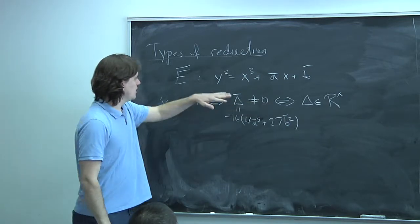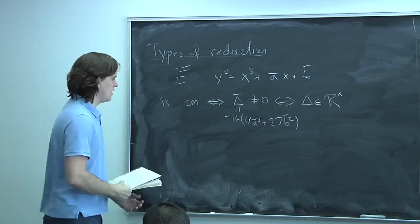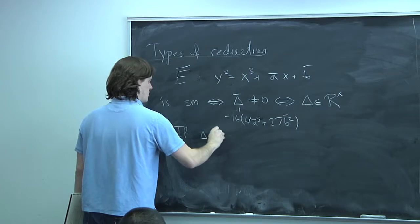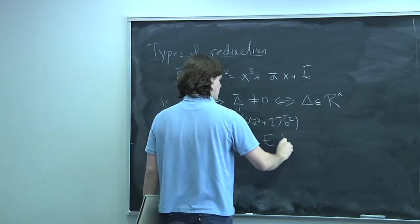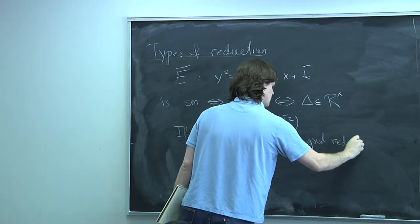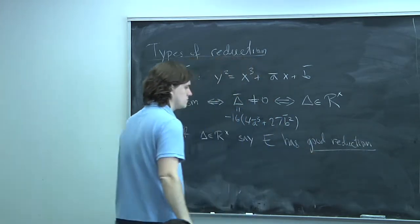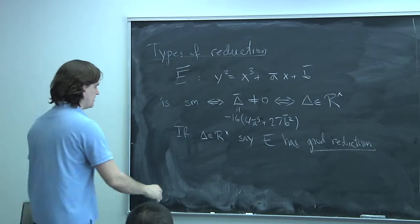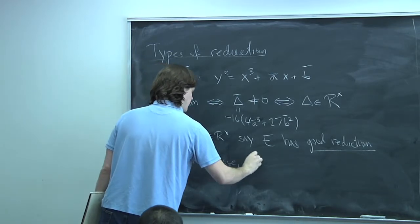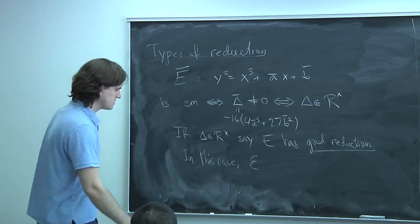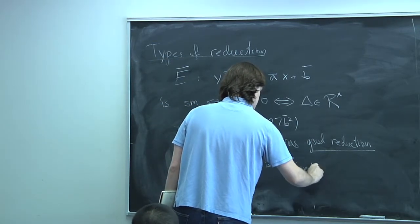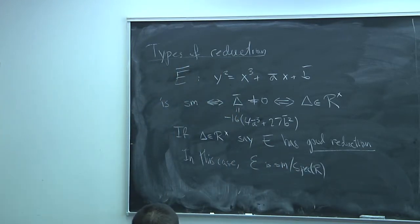When the discriminant is a unit, the reduced equation is smooth and it's an elliptic curve. In this case we say that E has good reduction. In this case, the minimal Weierstrass model — the whole thing as a scheme over R — is smooth over Spec R, and it's actually a group scheme over Spec R.